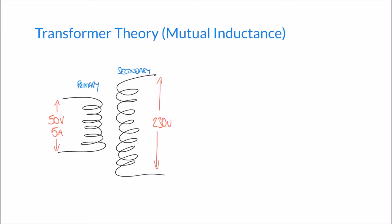In a previous video we looked at self-inductance in a coil of wire. This brings us to mutual inductance, where we have two coils of wire and the topic of transformer theory. A transformer is made up of two coils — the primary coil and the secondary coil. Because of mutual inductance, an AC voltage applied across the primary coil will induce a voltage in the secondary coil. The primary and secondary coils have no electrical connection between them; what they share is a magnetic connection — the primary coil creates a magnetic field which induces a voltage and current in the secondary coil.